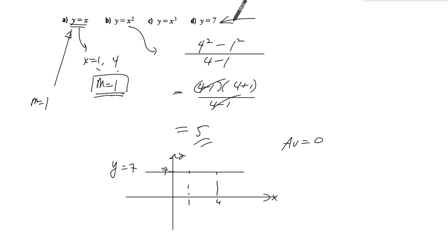And this one here, the instantaneous rate of change for y equals 7, the rate of change is always 0. So it doesn't matter where I'm finding it, the instantaneous rate of change will be, at any x value, 0.